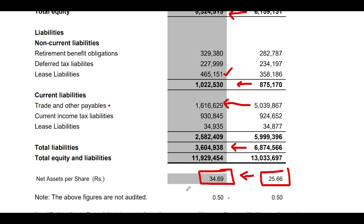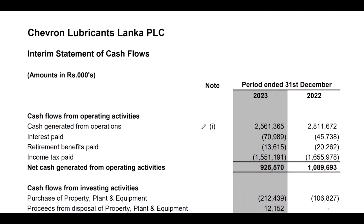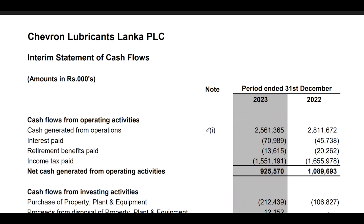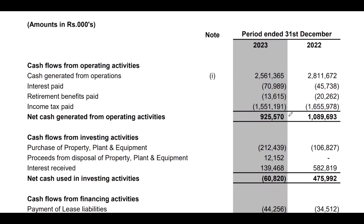Let's explain: we have a cash flow statement covering the performance of operating activities. If you have cash generated from operating activities, you will need to handle that accordingly. In the end, you can add the interest paid or the tax paid portion of the interest paid.